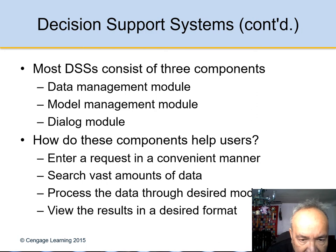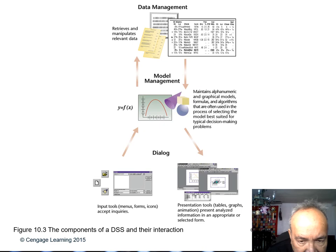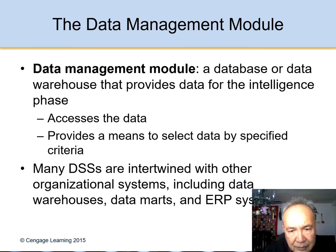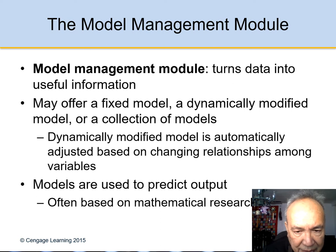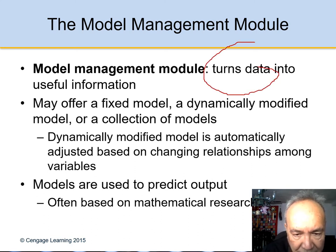Most DSS consist of three components: the data management module, the model management module, and the dialogue module. Here is a graphical representation of that structure. The data management module turns data into useful information.